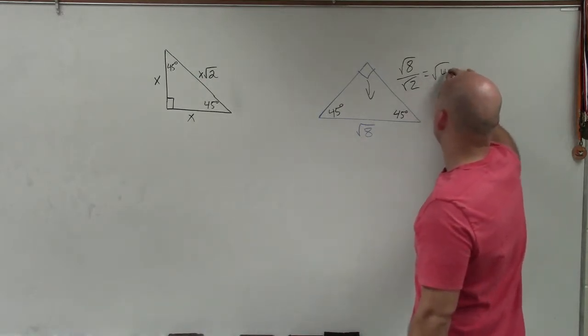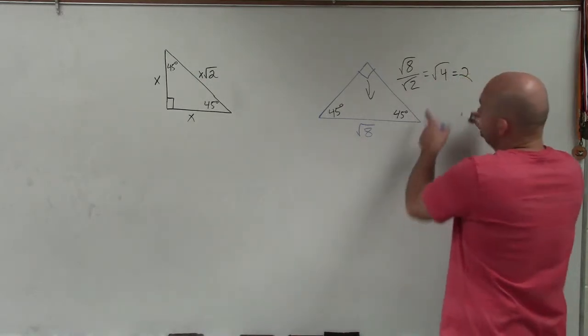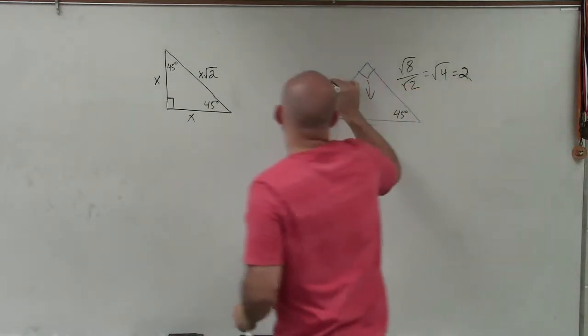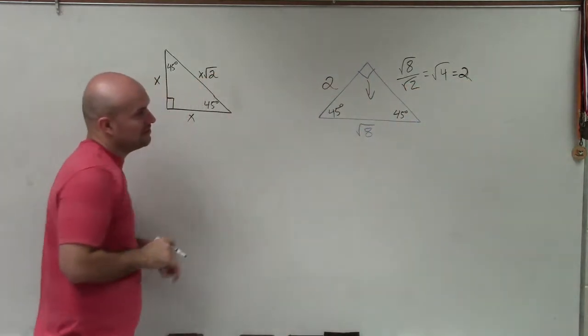So that gives me the square root of 4, which is equal to 2. And since one leg is equal to 2, we know that the other leg has to be equal to 2 as well.